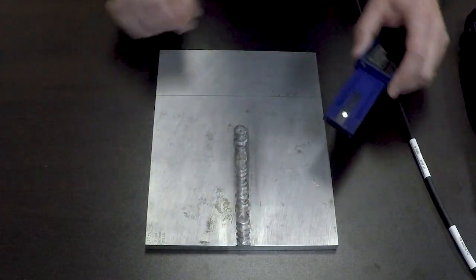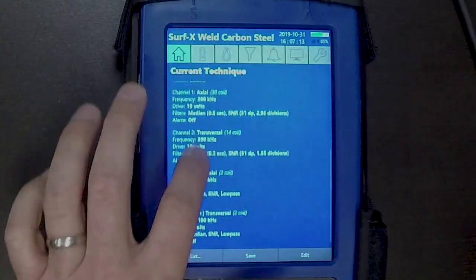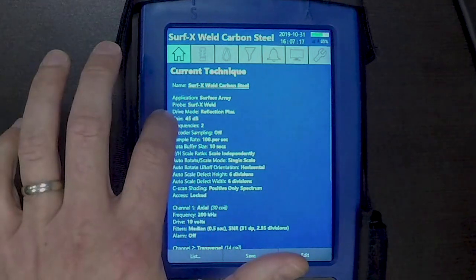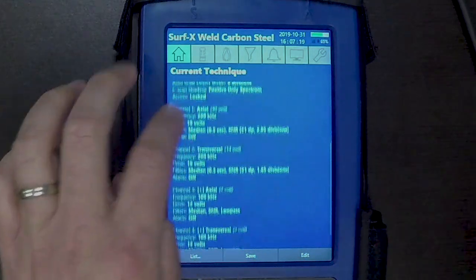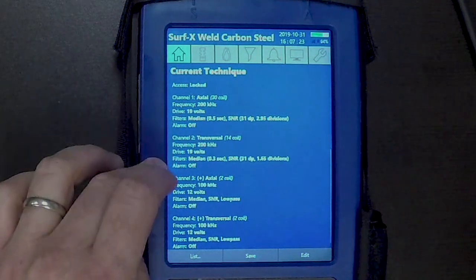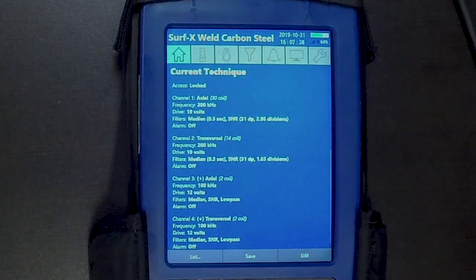In the instrument here you can see this is currently set up for this inspection. You can see the SURF-X weld probe there. It has multiple channels, so you have channel one and channel two which has your axial and transverse channels for the 32 coil array, and here you have it at 200 kilohertz.